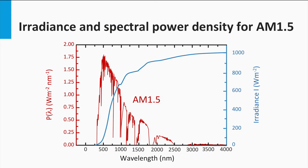The irradiance is the integration of the spectral power density function over lambda. This means that the area below the AM 1.5 spectrum in this figure corresponds to the irradiance. The blue line shows the integration from 0 up to lambda, and the area below the spectral power density equals 1000 watts per square meter, as expected for the AM 1.5 spectrum.